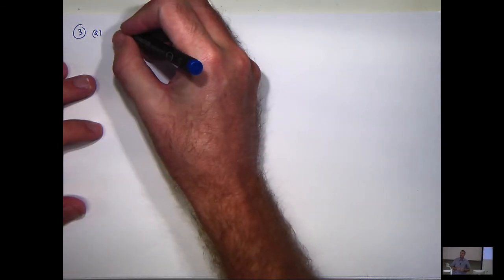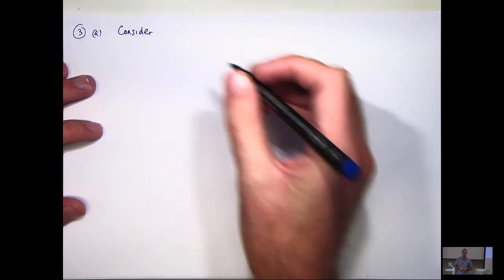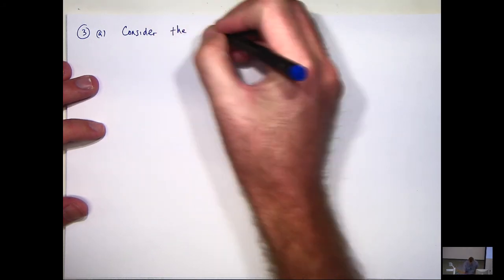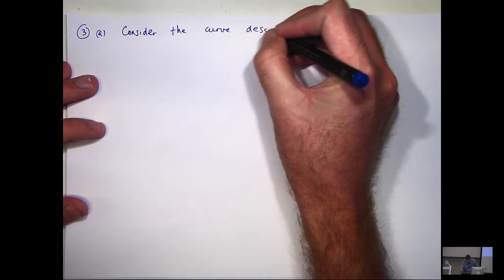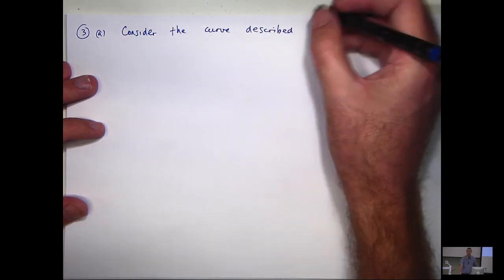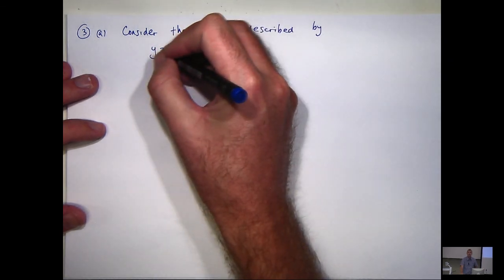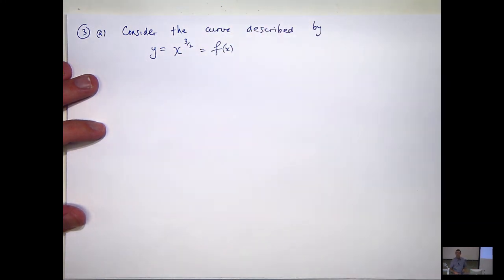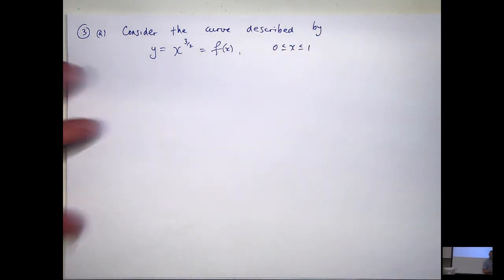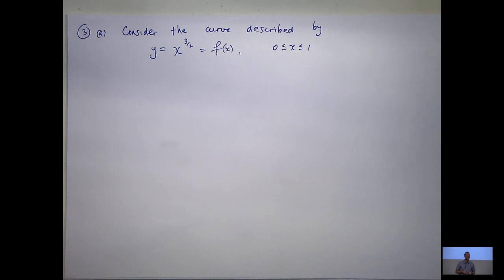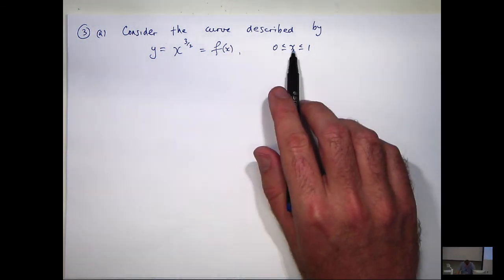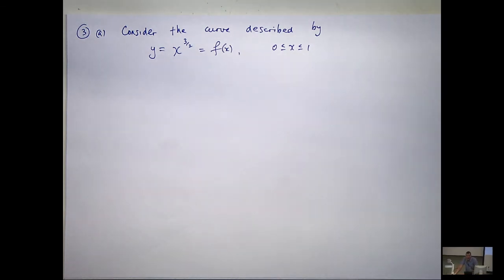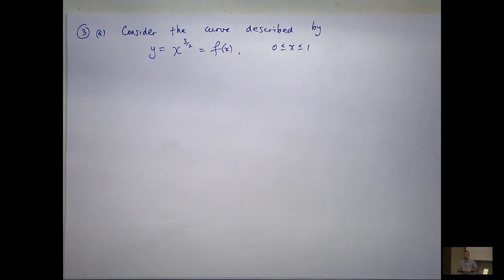In the first question we are asked to consider the curve. We're only interested in the interval of x values from 0 to 1, and we're asked to calculate the arc length of this curve. There's a definite formula for the arc length — does anyone remember how you derive the formula? What the basic idea is?